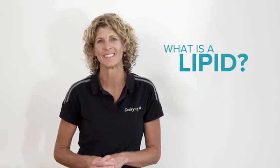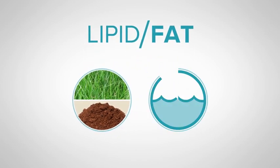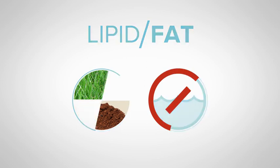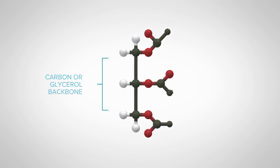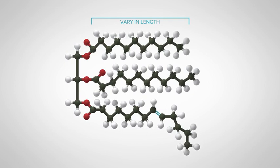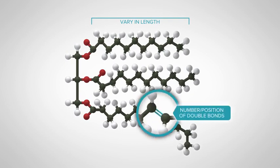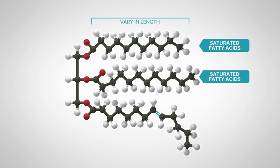So what is a lipid? A lipid, or a fat as it's more commonly called, is a substance found in plant and animal products that is not soluble in water. The basic structure of a fat is a carbon or glycerol backbone with three fatty acids connected to it. The fatty acids can vary in length and in the number and position of double bonds that they have. If they have no double bonds, they are known as saturated fatty acids. If they have one or more double bonds, they are called unsaturated fatty acids.